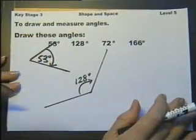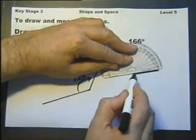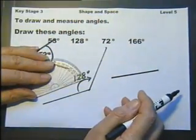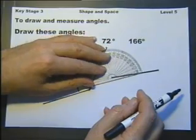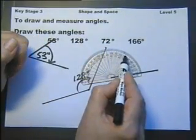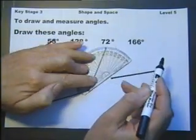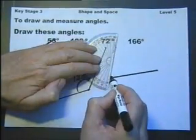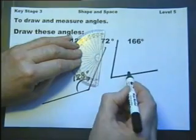72 degrees. Put the protractor on this end. 10, 20, 30, 40, 50, 60, 72 degrees.